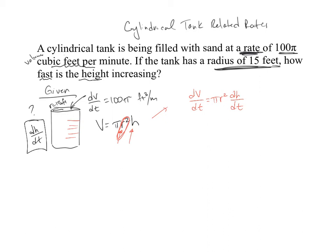Alright, so now let's plug in some numbers. We have 100π right here equals π. We know the radius is 15 squared. This is going to be feet cubed per minute. This is going to end up being feet squared, so then we'll end up with feet per minute when we're done, and this is going to be dh/dt.